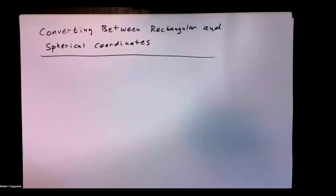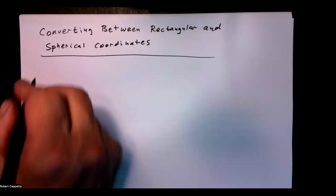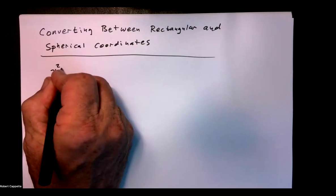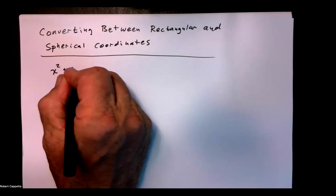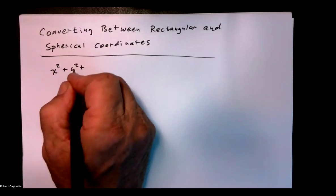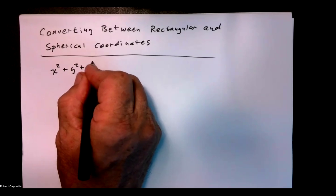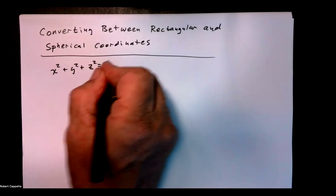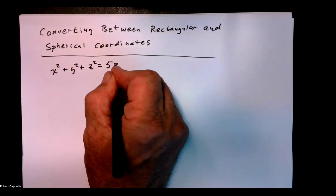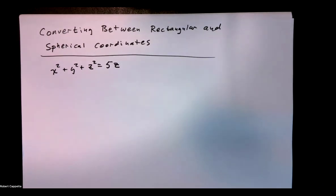We're going to discuss converting between rectangular and spherical coordinates. Let's take a look at the following example. If I have x squared plus y squared plus z squared equals 5z, what would that equation be in spherical coordinates?